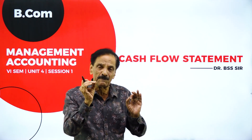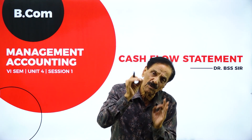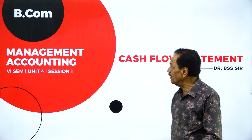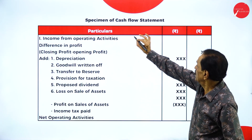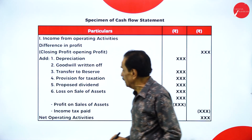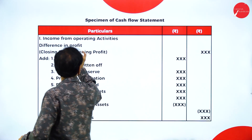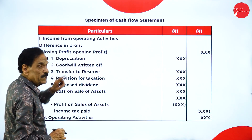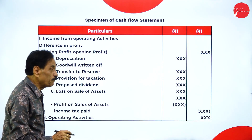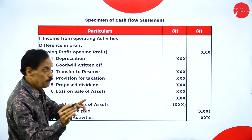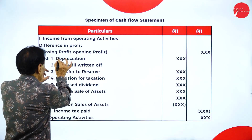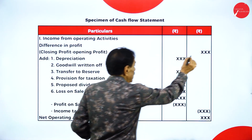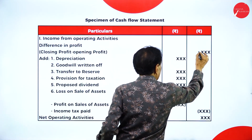I will give a beautiful format — according to the format you have to work. This is a specimen of the cash flow statement. Income from operating activity: first you have to take the difference in profit — closing profit minus opening profit. The result will come here.